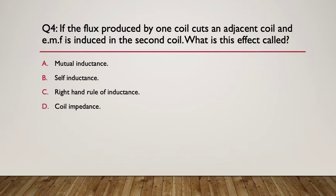Question 4: If the flux produced by one coil cuts an adjacent coil and EMF is induced in the second coil, so what's that effect called when that happens? Do we call it A. mutual inductance, B. self-inductance, C. right hand rule inductance, or D. coil impedance? So pause here.